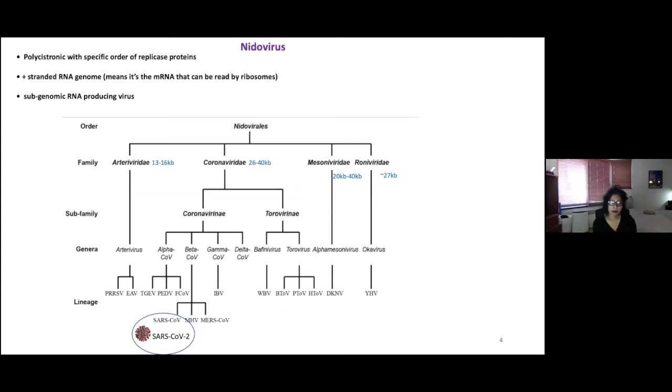I'll give you a little bit of background. SARS-CoV-2 coronaviruses come and fall under the order of nidoviruses. I'm showing you this tree because the nidoviruses are special in that they have a specific order of how the replication proteins are organized in this polycistronic conformation.